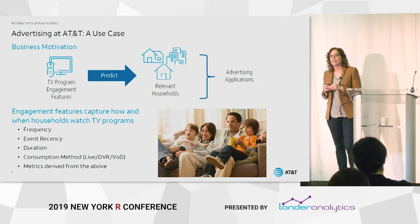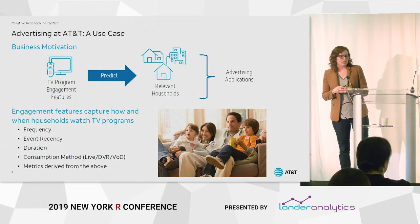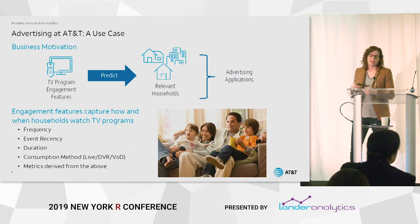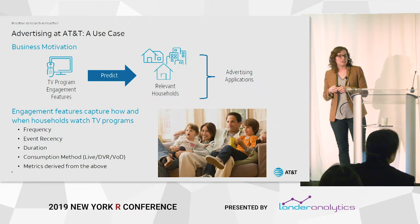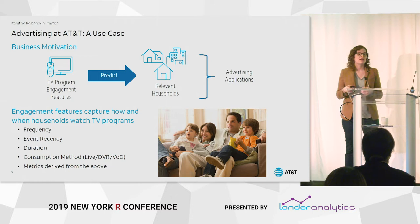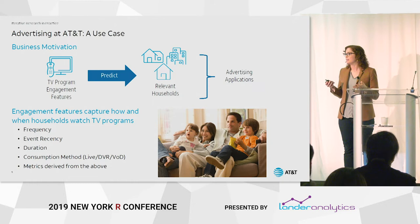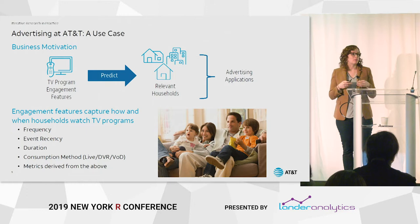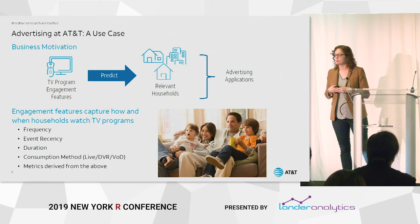As a framework for those engagement features, our advertising colleagues at Xandr — AT&T's ad group — had come to us with features from route and attribution literature. The original ones were: frequency (how many unique airings of a program a household watches), event recency (how many days since their last viewing event for a program), duration (how much time they watch), and consumption method (how they watch it). We had to normalize these to account for the fact that different shows have different lengths and air at different frequencies. We also had information about engagement based on how people tune away during commercials — research has shown that the more you flip around and come back to a show, the more engaged you are.